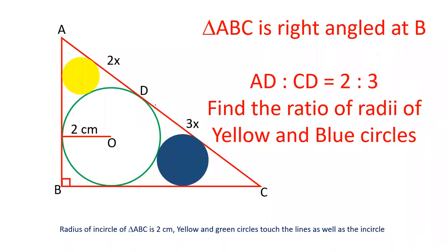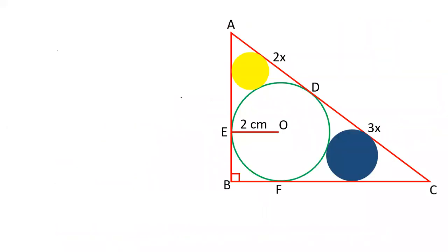Hello friends, welcome to our YouTube channel SSC Collector. In today's video, we are going to learn how to find out the radius of the yellow circle and the blue circle, if the two circles touch the in-circle of triangle ABC and also touch two sides AB, BC and BC, AC respectively. It is also given that the ratio of sides AD and CD is 2:3, and the radius of the in-circle is 2 centimeters. Let's see how we can solve this question.